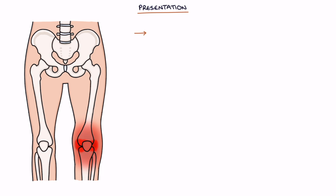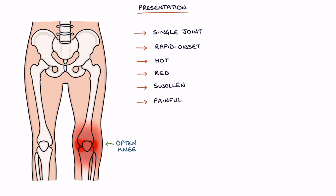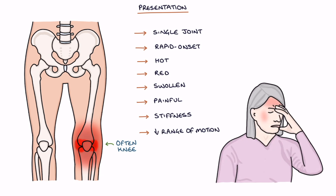Septic arthritis usually only affects a single joint, often a knee. It presents with a rapid onset of a hot, red, swollen and painful joint, stiffness and reduced range of motion in the joint, and systemic symptoms such as fever, lethargy and sepsis.